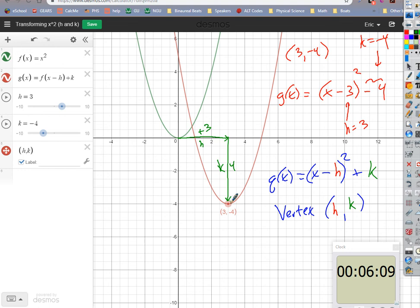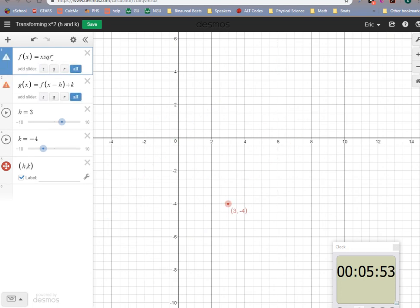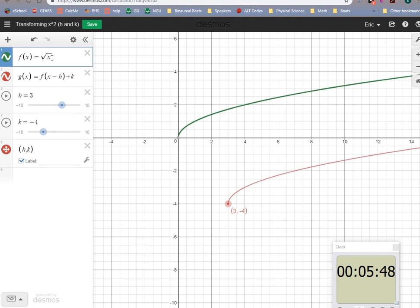So it doesn't really have to even be an x squared graph, and we could change this. We could make it like a square root graph or something. If I make it a square root graph, I did the same thing. All I did was I just took the starting point, that's our special point, and now its coordinates are 3, negative 4, but it's the same looking graph.